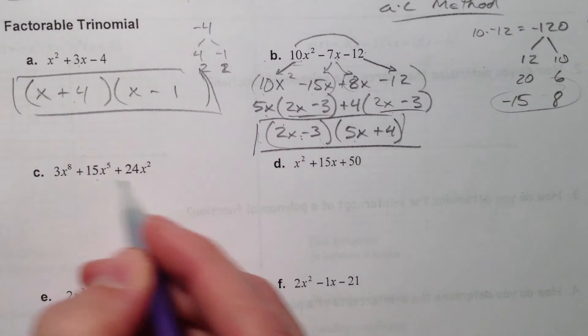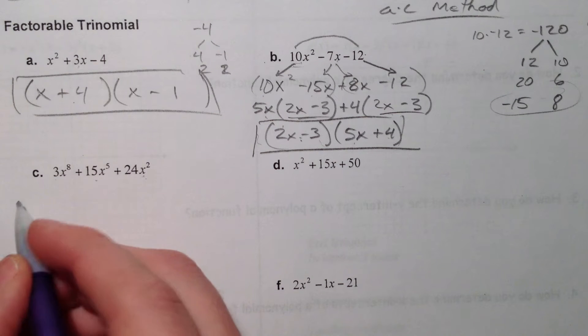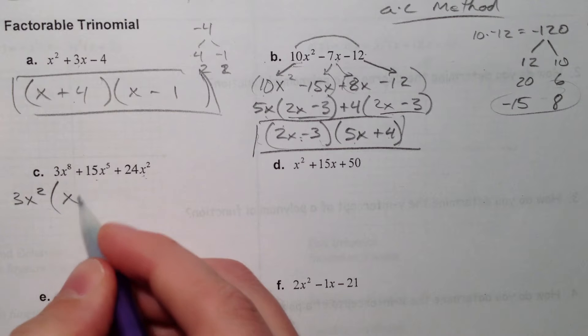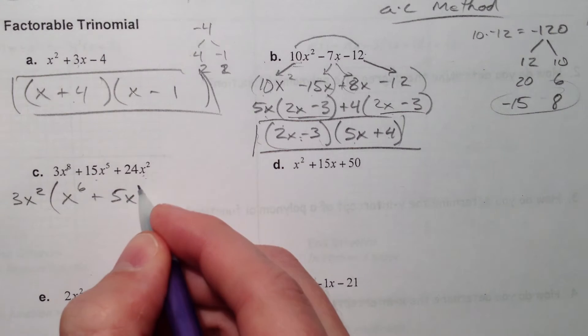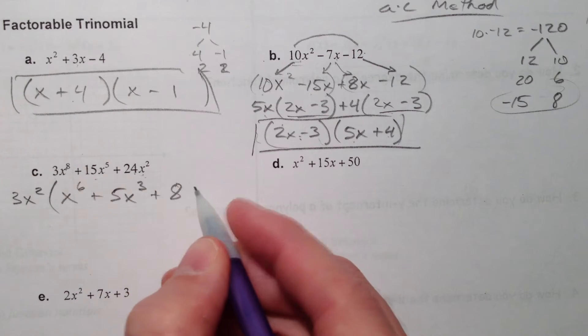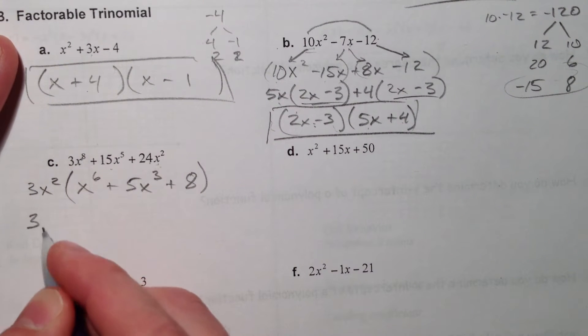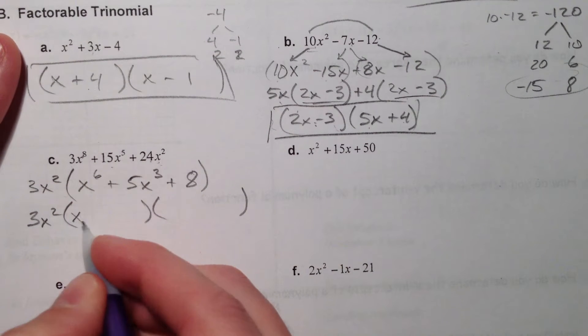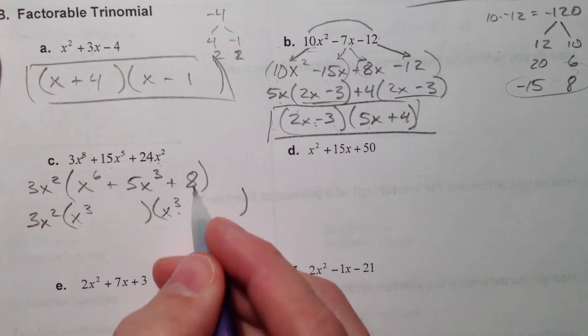Alright, another. All of these have something in common. They have a 3 in common and an x² in common. So I'm going to pull that out first. And that leaves x⁶ + 5x³ + 8. So this one's a little different because it's got x⁶ and x³. But realize that if we split it up like we usually do, this is just x³ and x³. Because x³ times x³ will get us x⁶.